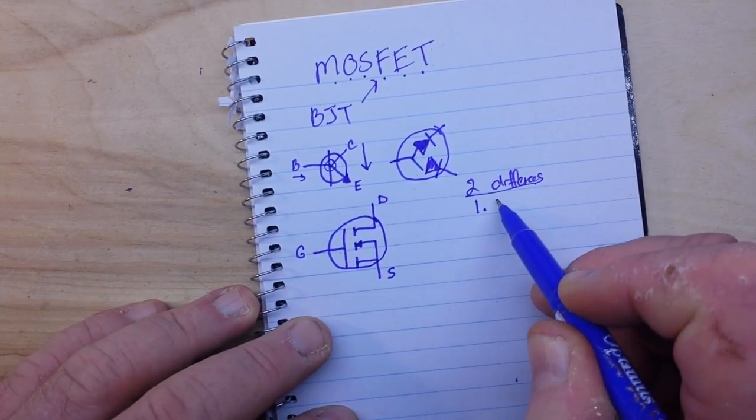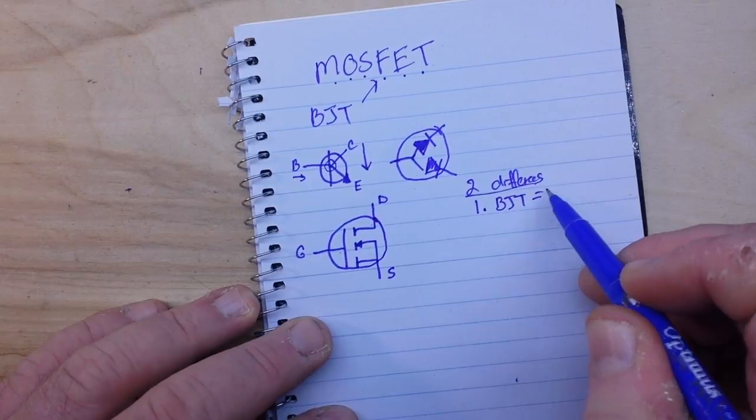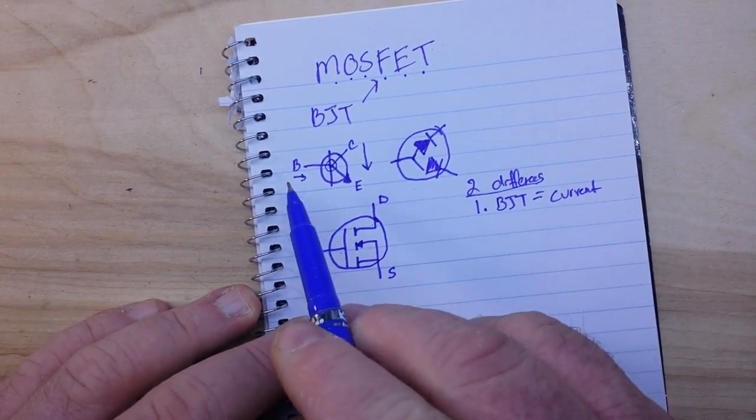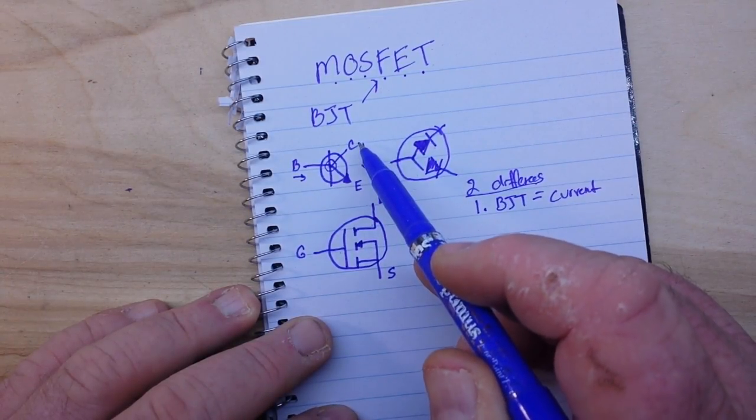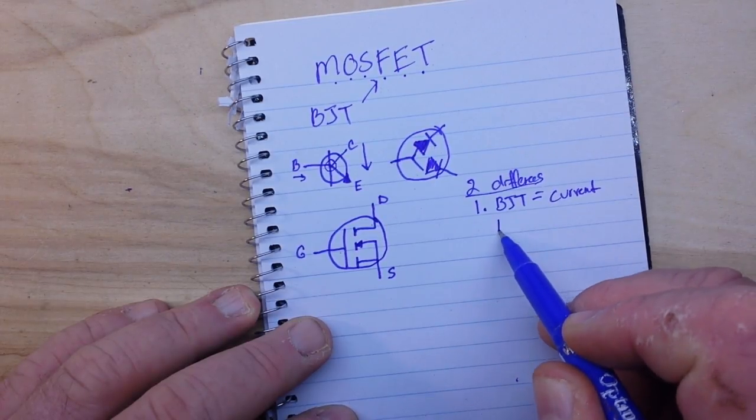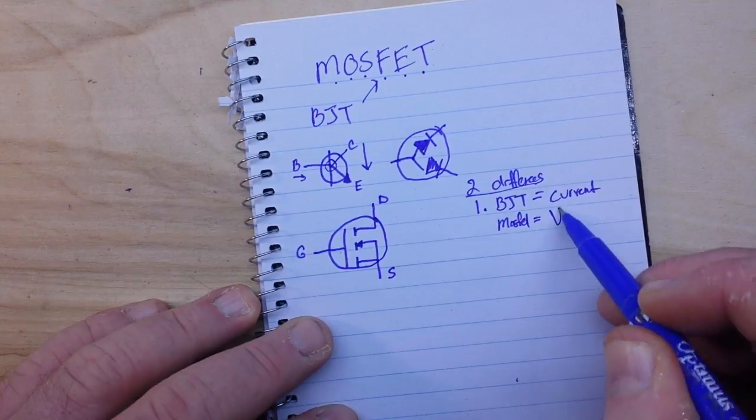Number one: BJT is all about current. A small current into the base induces a larger current from collector to emitter. But with a MOSFET, it's about voltage.